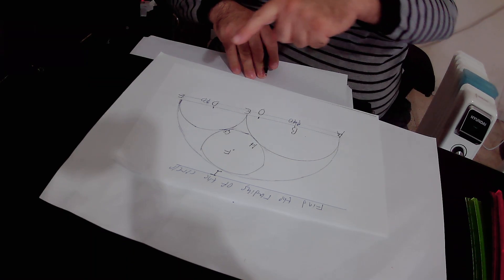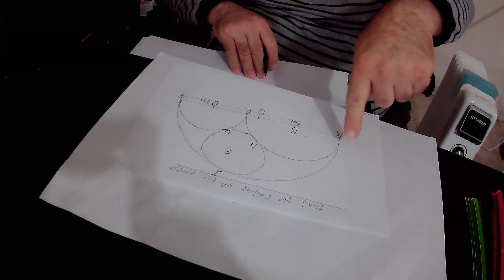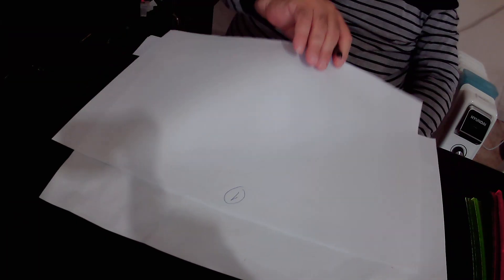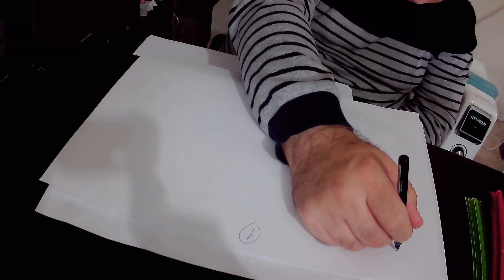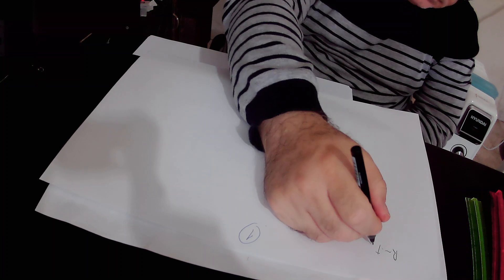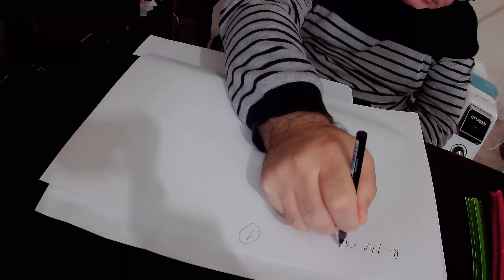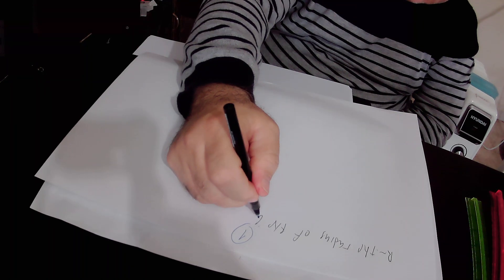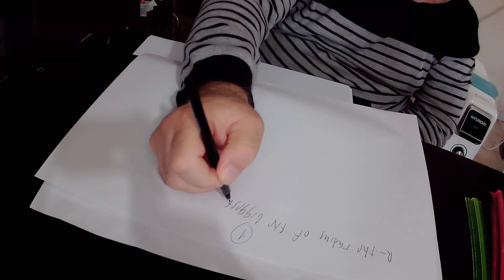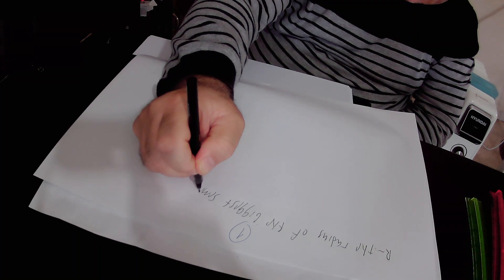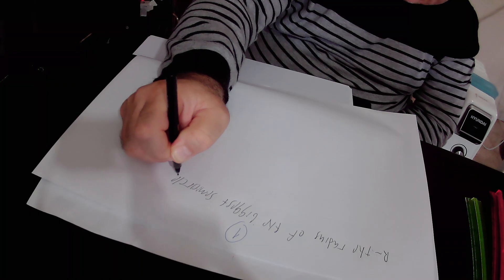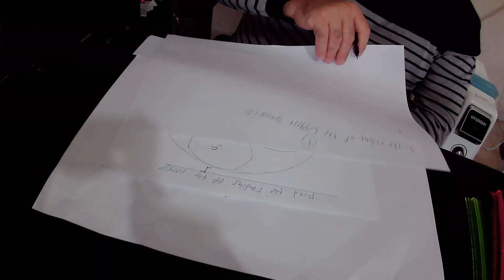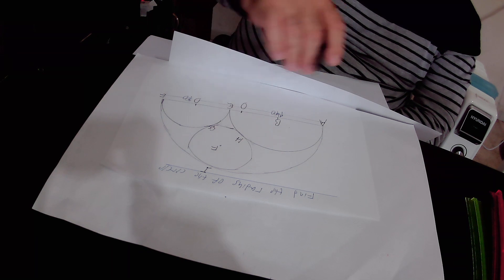In the next step we define the radius of the biggest semi-circle. The biggest semi-circle has capital R, and the radius of this smaller semi-circle is small r. We have to find out the radius of this circle.